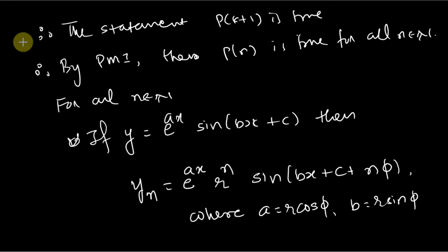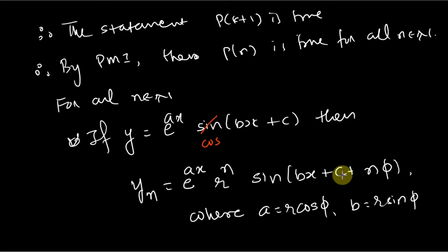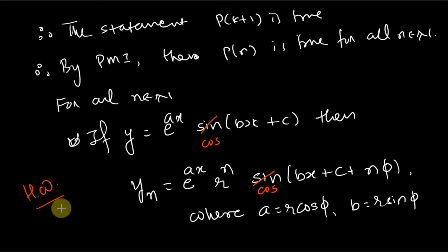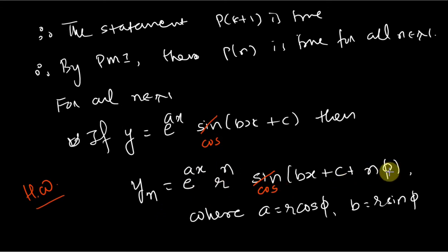The next natural question one can ask is: what will be the nth derivative of e^(ax) cos(bx + c)? The formula is the same — instead of sin, write cos. This is given as homework: try to prove that if y = e^(ax) cos(bx + c), then y_n = r^n · e^(ax) · cos(bx + c + nφ), where a = r cos φ and b = r sin φ.